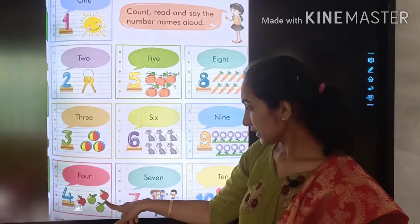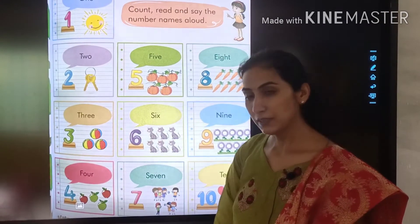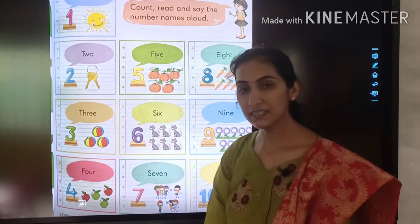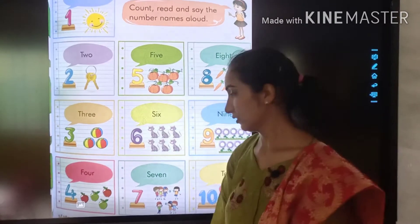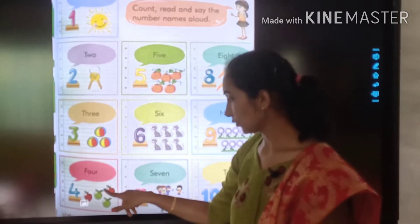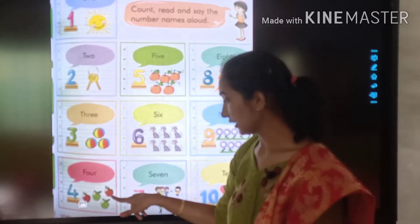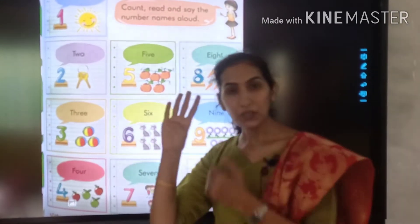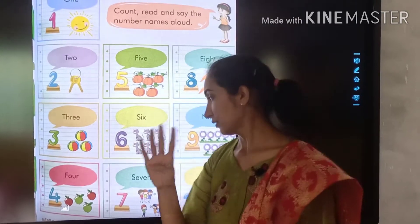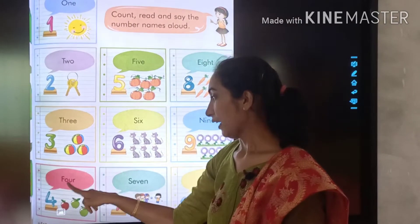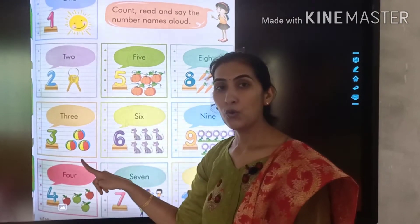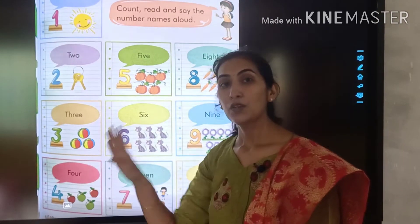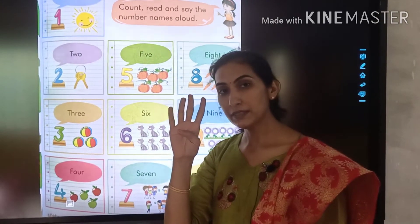Then, what is this? Apple! How many apples can you see here? 1, 2, 3, 4. 4 apples. F-O-U-R, 4. 4 apples.